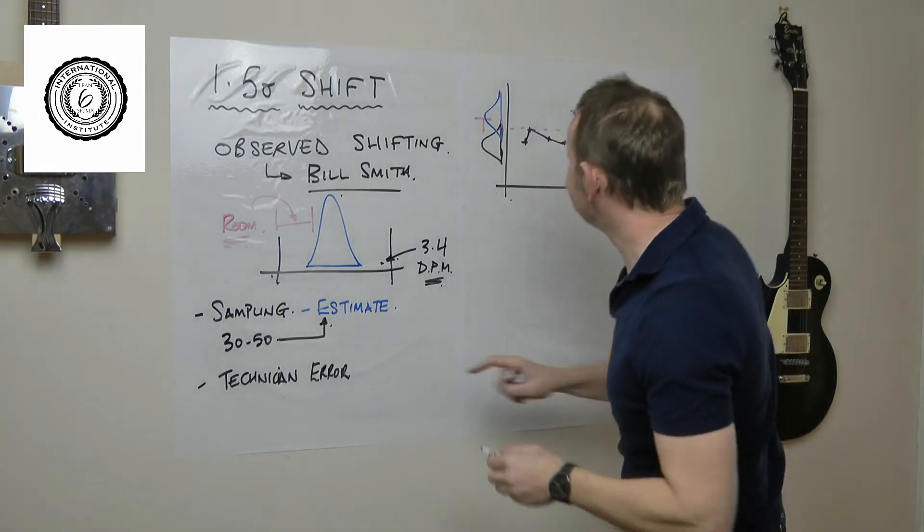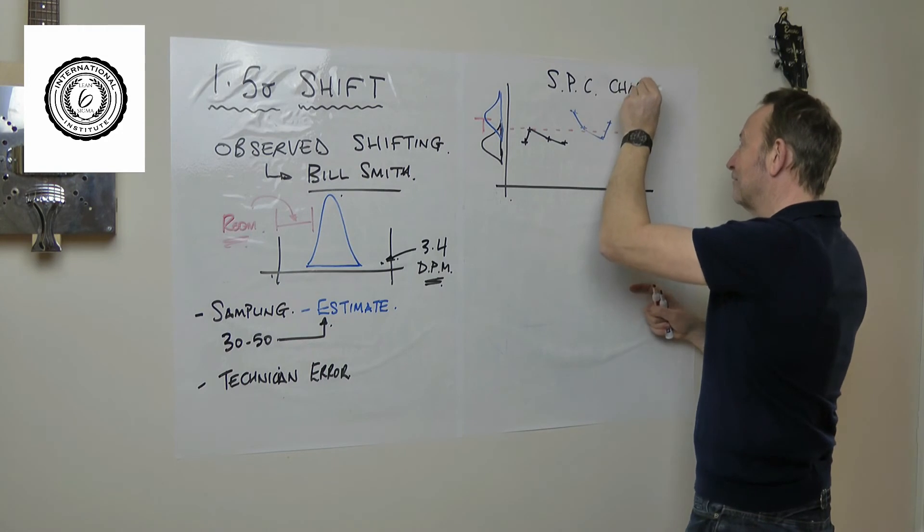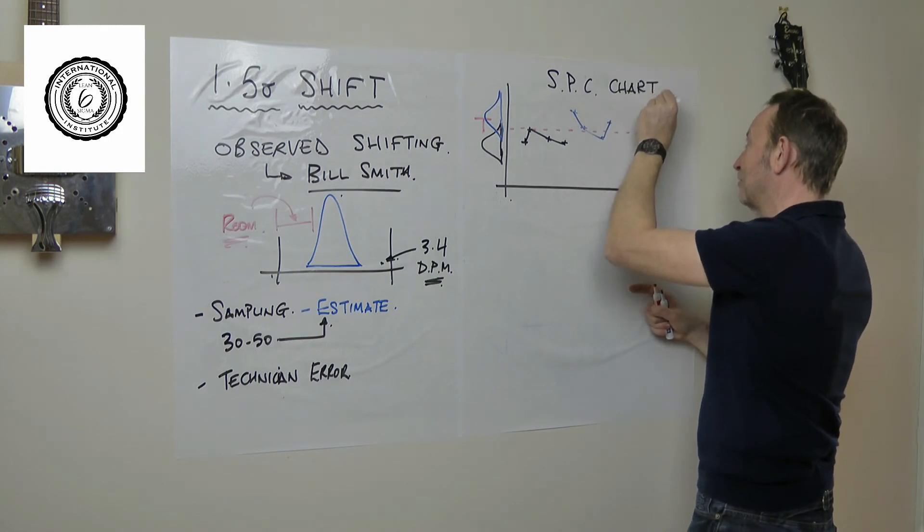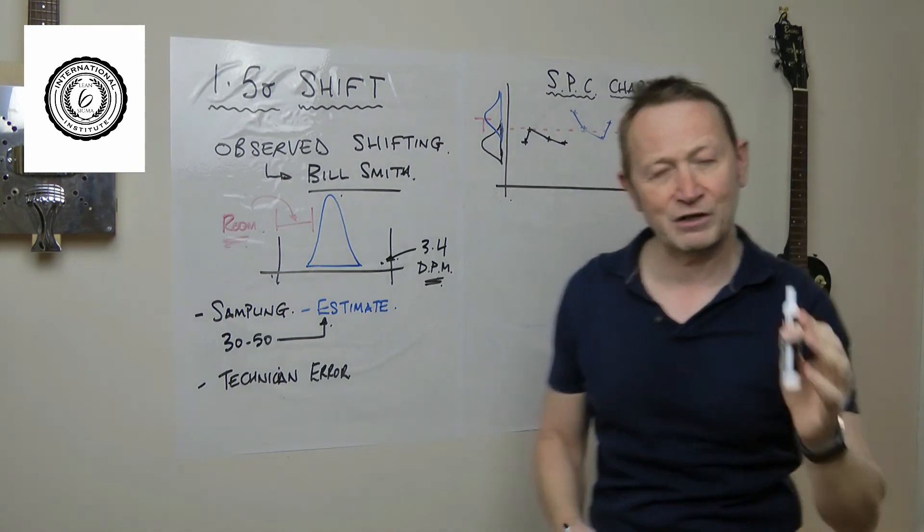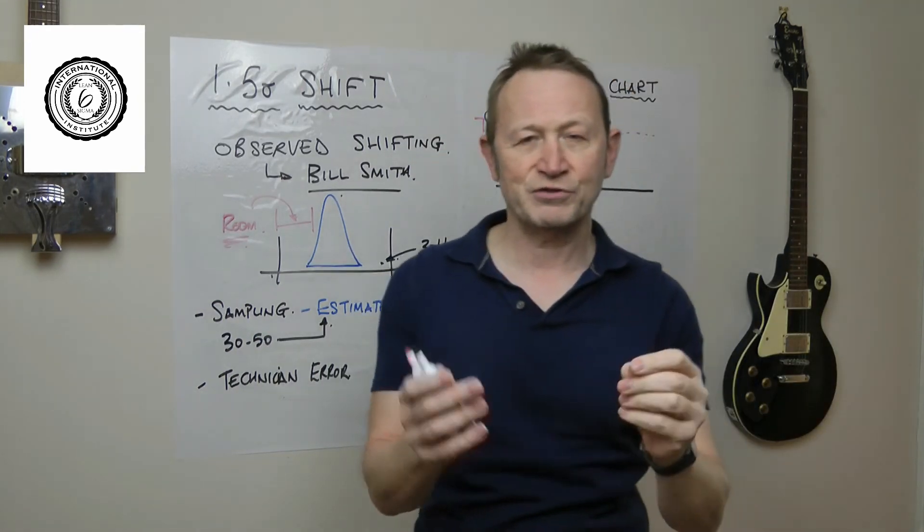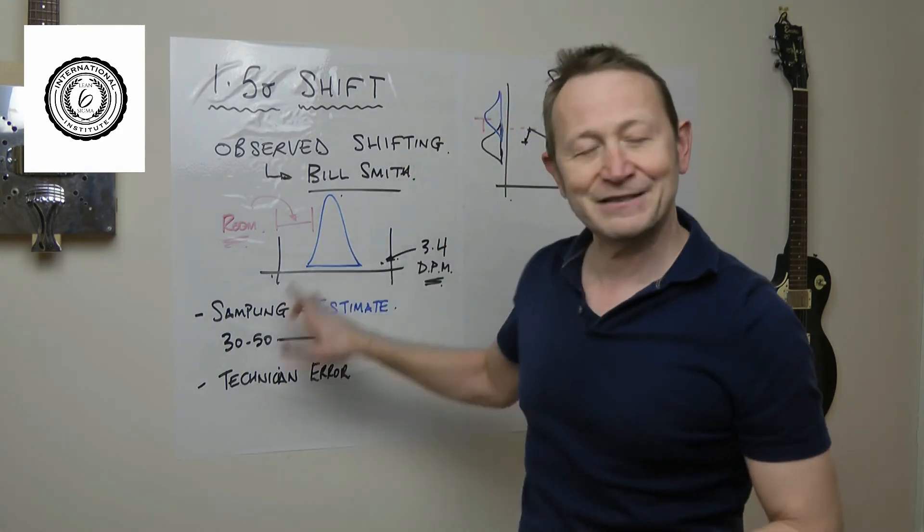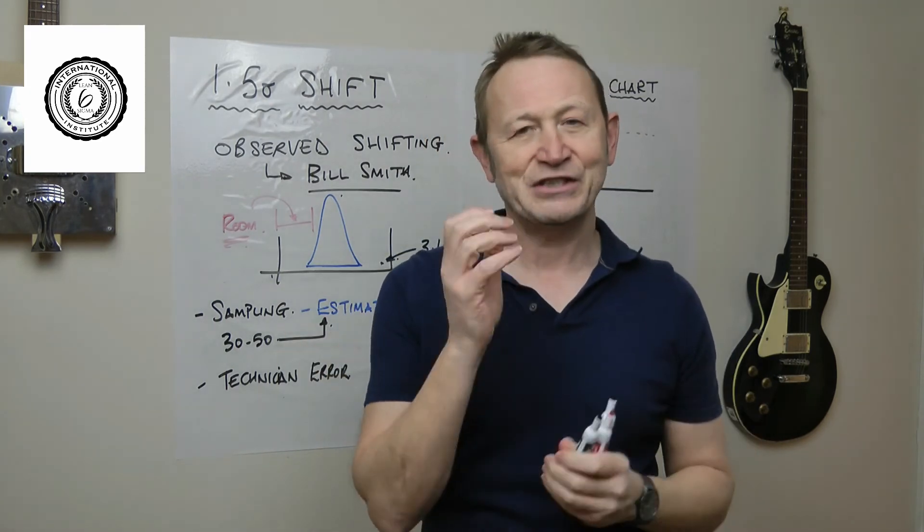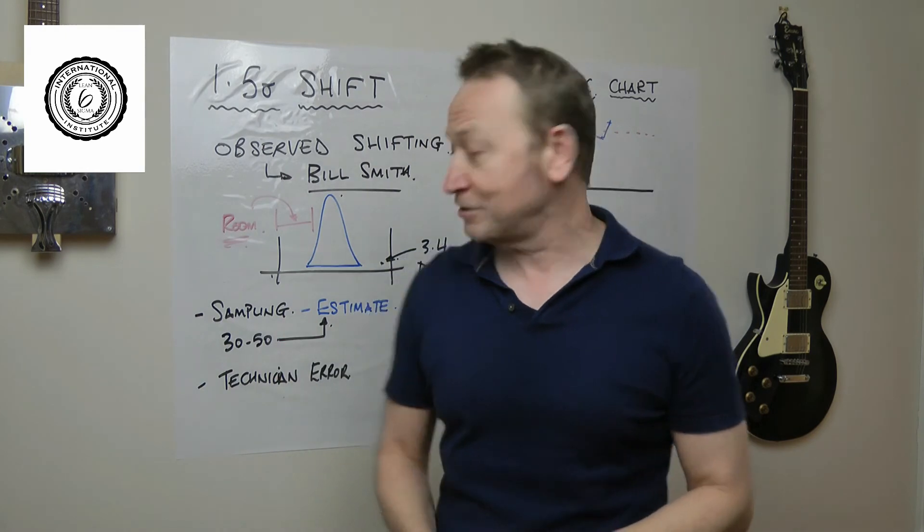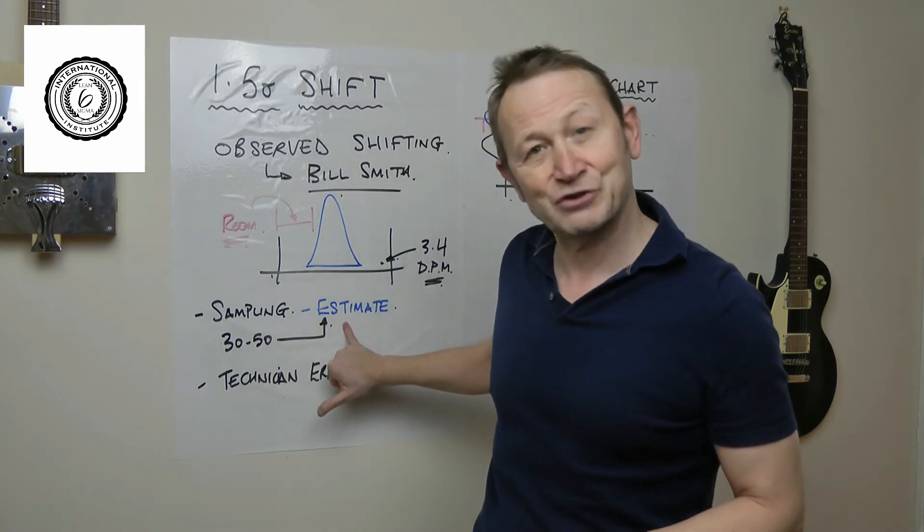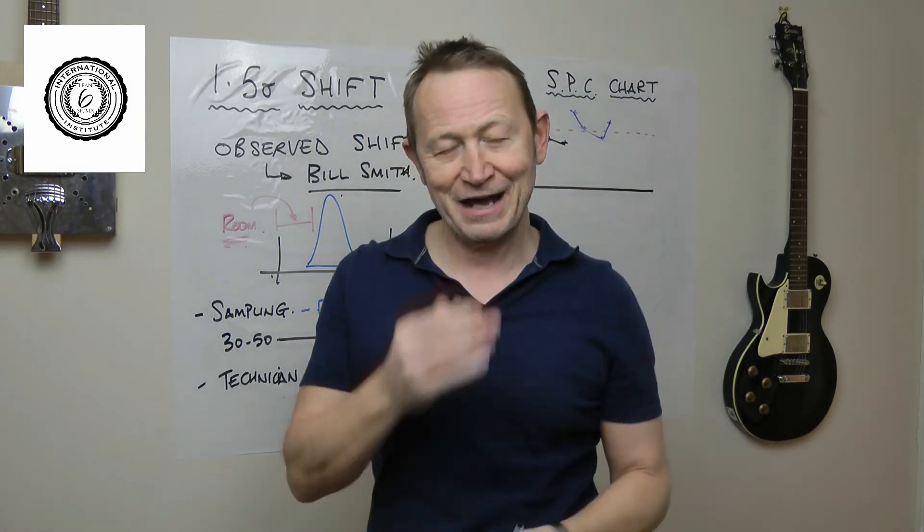By the way, in order that he didn't need 30 to 50, the best thing he can do is use an SPC chart. Nobody seems to want to use SPC charts anymore, but if he used an SPC chart it would make centering the process much easier for him. But he can never know that he's centered the process. He simply doesn't collect enough data, and he only ever collects an estimate, even when he does collect a good series of data.